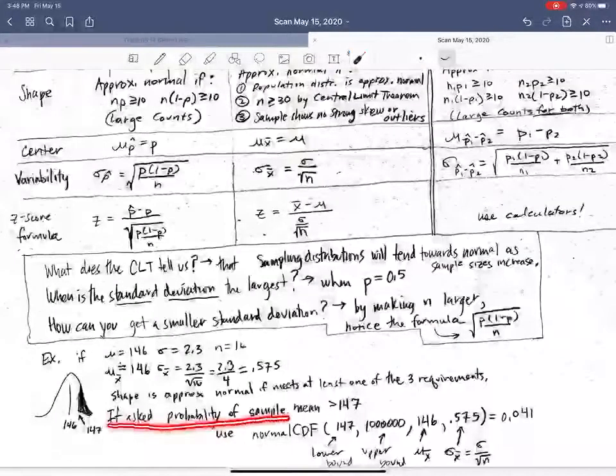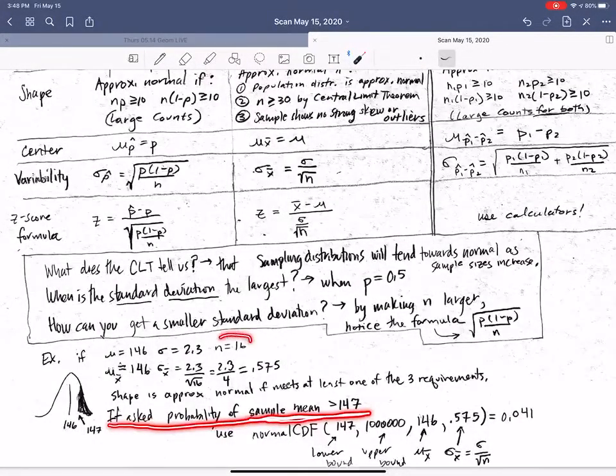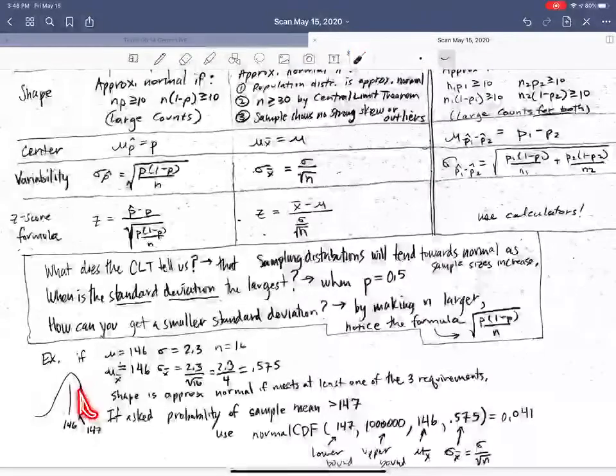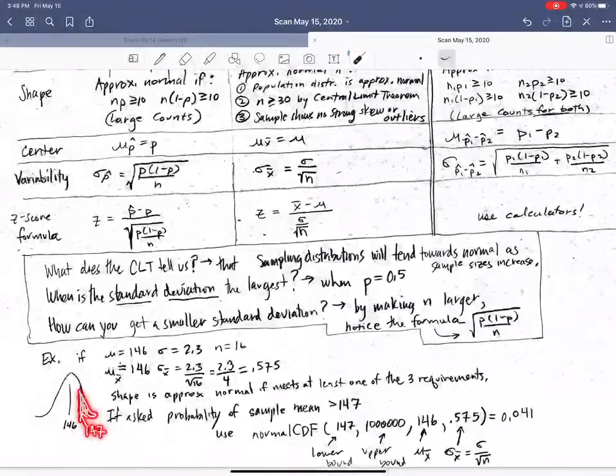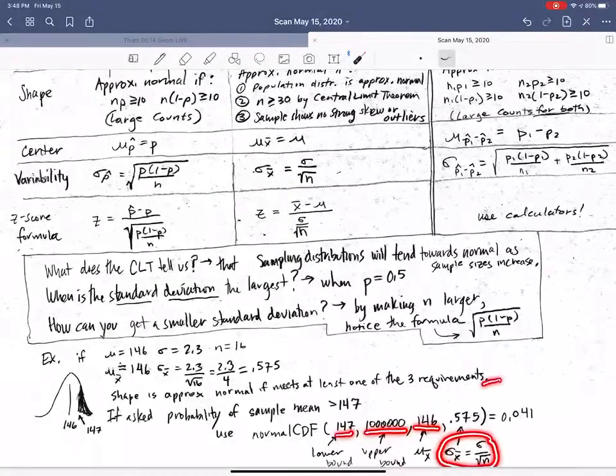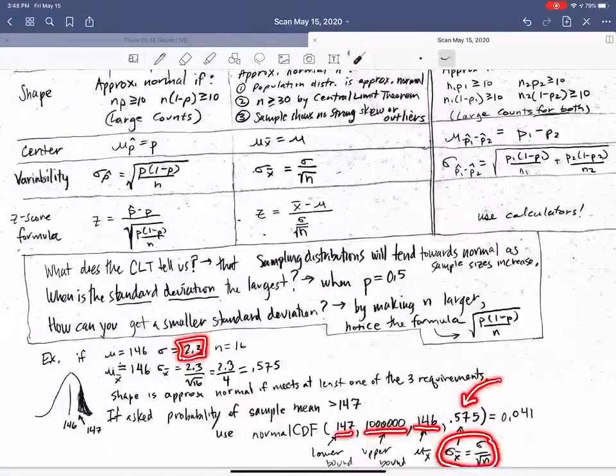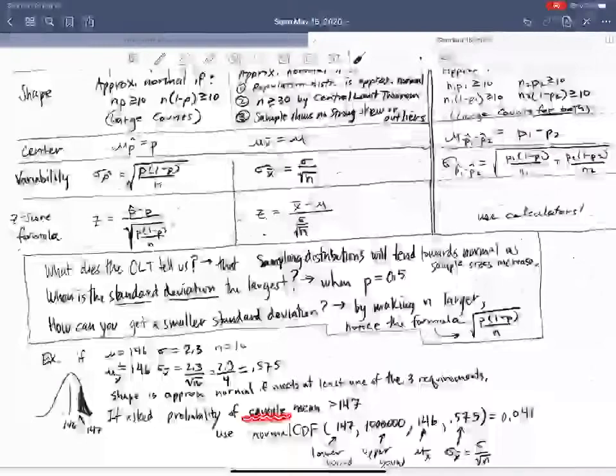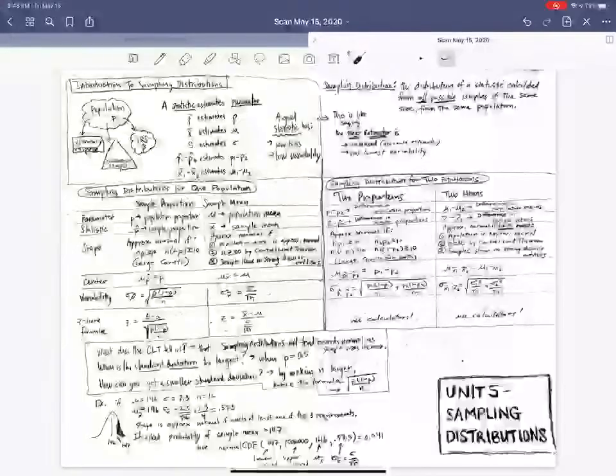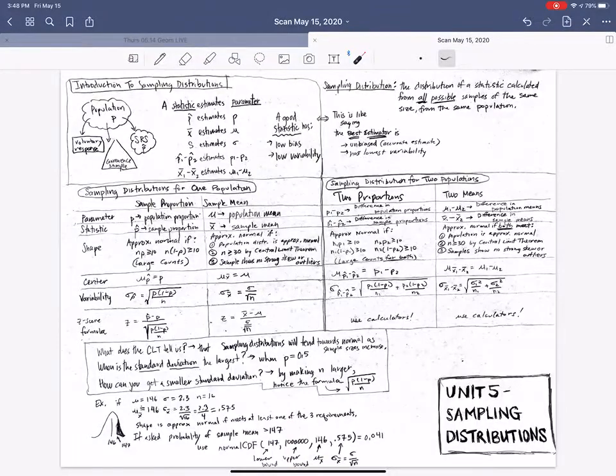So if they asked in a problem, what if a sample, the sample mean of 16 balls, what would be the likelihood it would be greater than 147? Notice, just like a normal CDF, I make my shading here and I use normal CDF. My lower bound, my upper bound, my mean, and now here, be very careful, my standard deviation is different than the standard deviation given of 2.3. The reason is because they asked what would be the likelihood that the sampling or the sample mean would be that. And that's the importance and that's the difference between population distributions and sampling distributions. Thanks for joining me, guys. Have a good one.